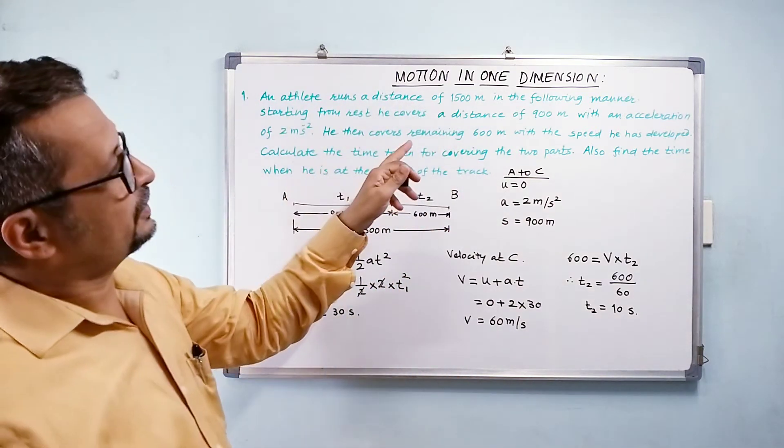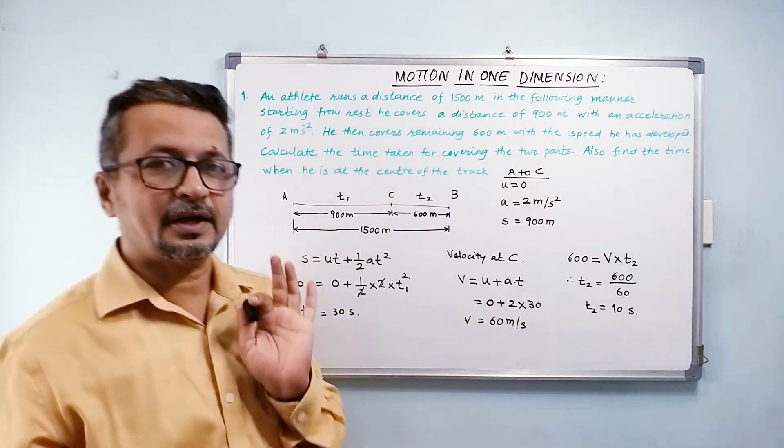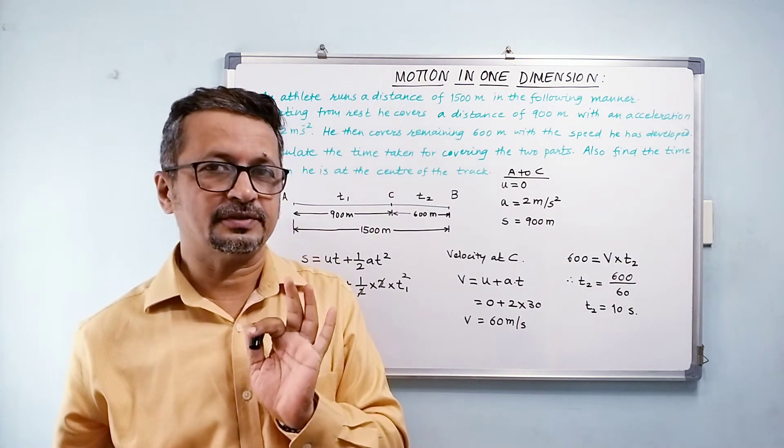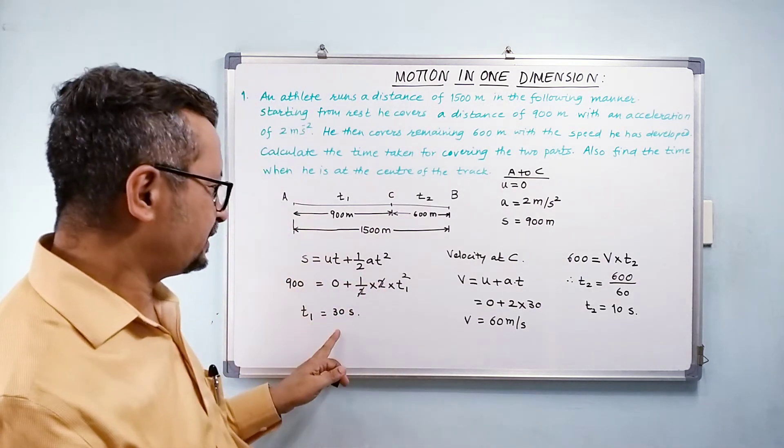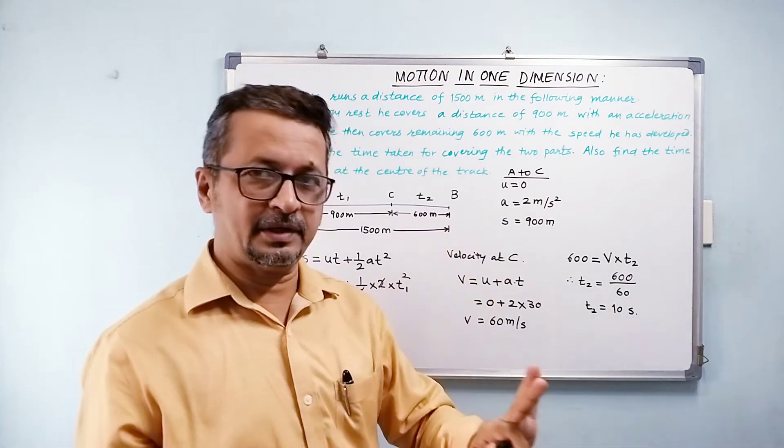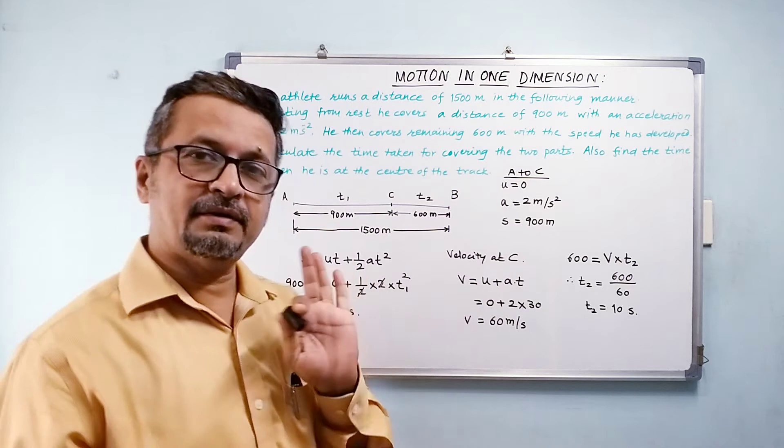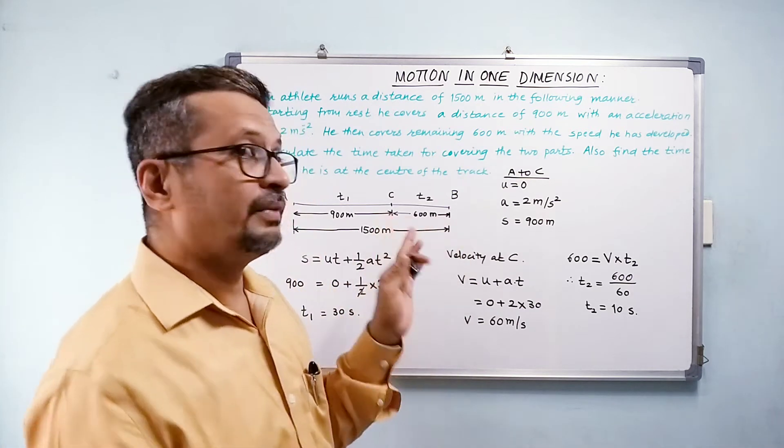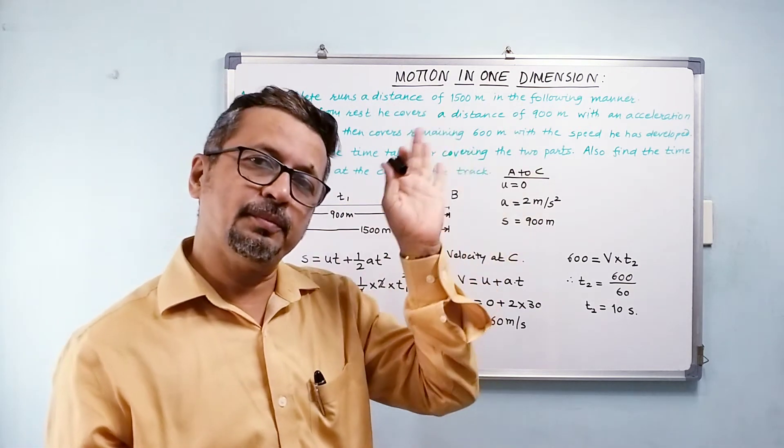So my first part of the equation is done. My total time is 30 seconds plus 10 seconds. So calculating time with my velocity at C onwards, from C up to B, it is going to be 60 meters per second.